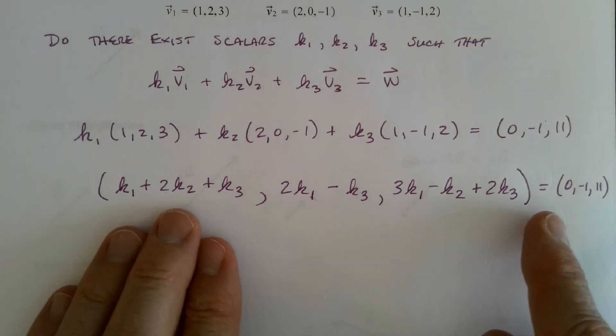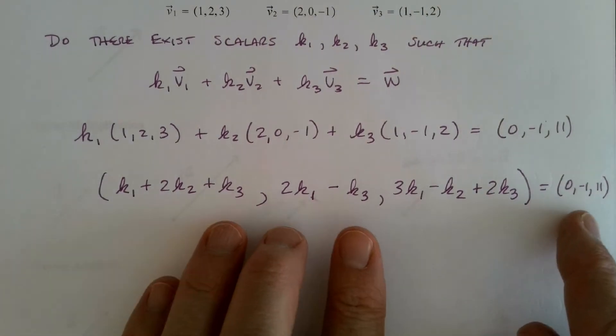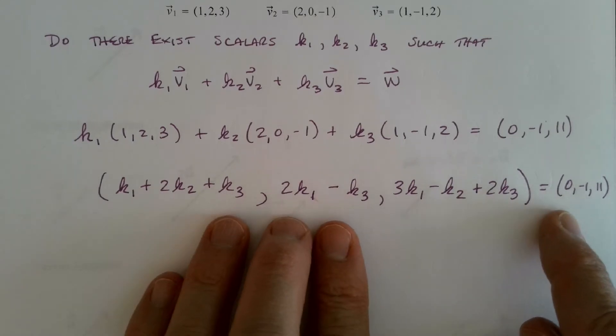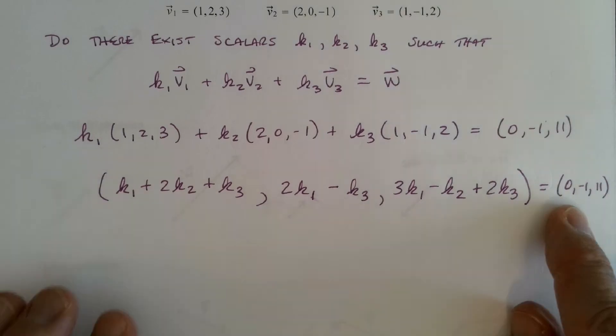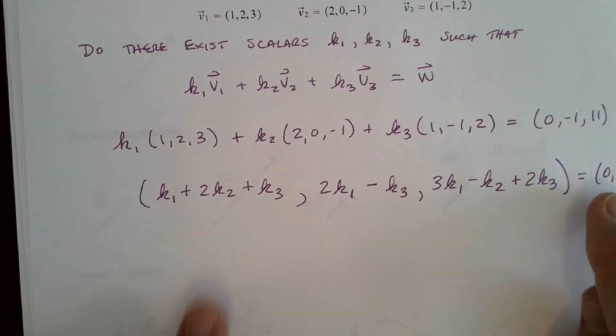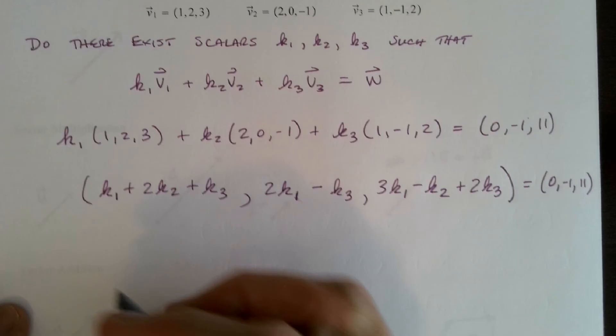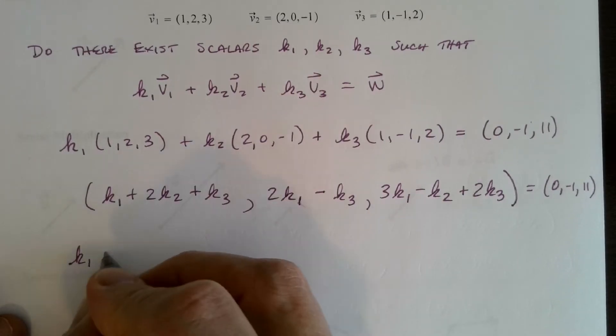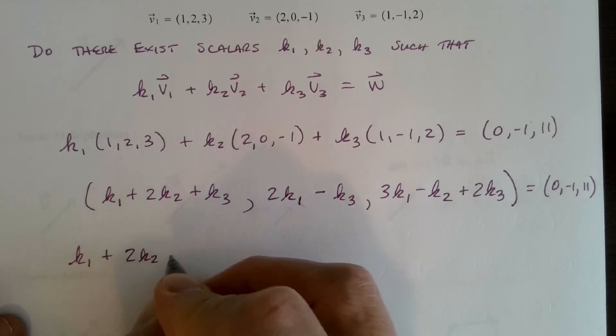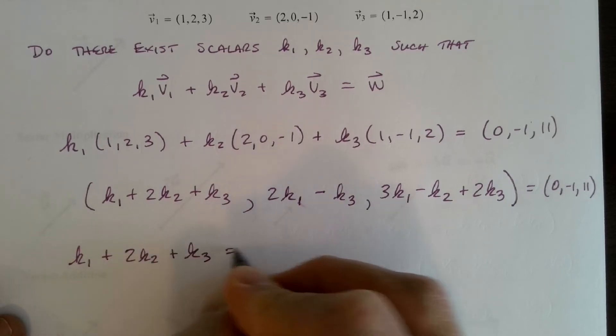Okay, now, what do we say? We've got two vectors that are both ordered triples, both reside in three-space. When are they equal? They're equal if and only if corresponding components are equal. That means the first component here, this expression here, has to equal the first component here, which is 0. So let's just write that out. It's k1 plus 2k2 plus k3 must be 0.